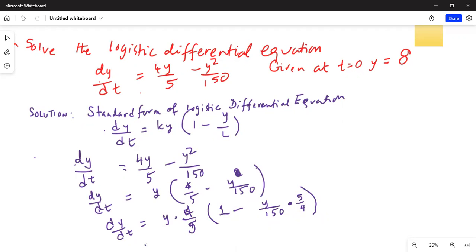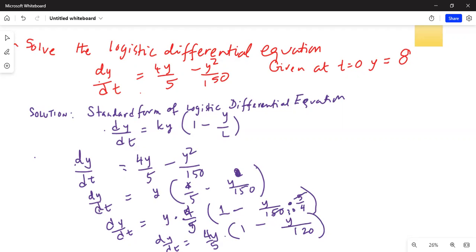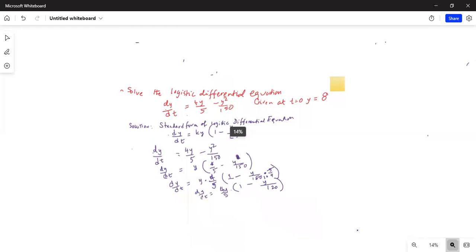So dy by dt is equal to 4 fifth y times 1 minus y over 120. 5 goes into 150 30 times, and 4 times 30 is 120. So this is my logistic equation.